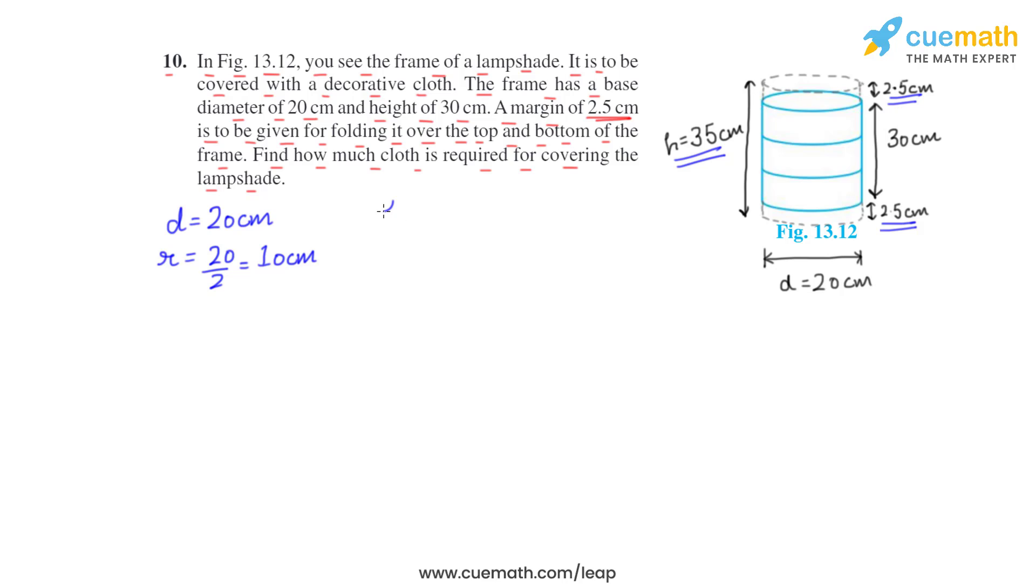Next, they have given that height will be 30, so 30 is the height of the lampshade frame, and then for margins 2.5 extra on the top plus 2.5 extra on the bottom.